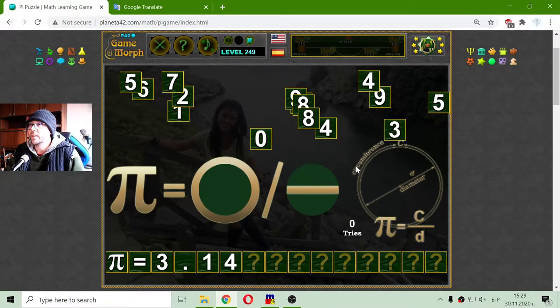Or if the circumference is C and the diameter is D, Pi should be equal to C over D or divided by D. So this is actually the Pi number.